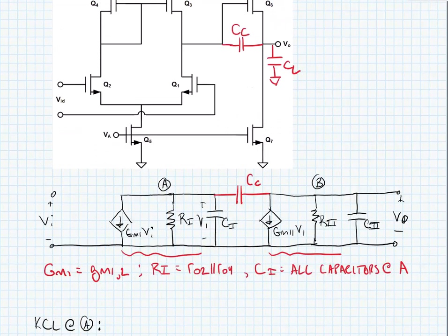I'm going to label the output node of the circuit node A, and we'll note that big GM1 is just equal to little gm1 or 2, as we found before. Ri is equal to RO2 in parallel with RO4, and Ci is equal to all of the capacitors that are at node A.